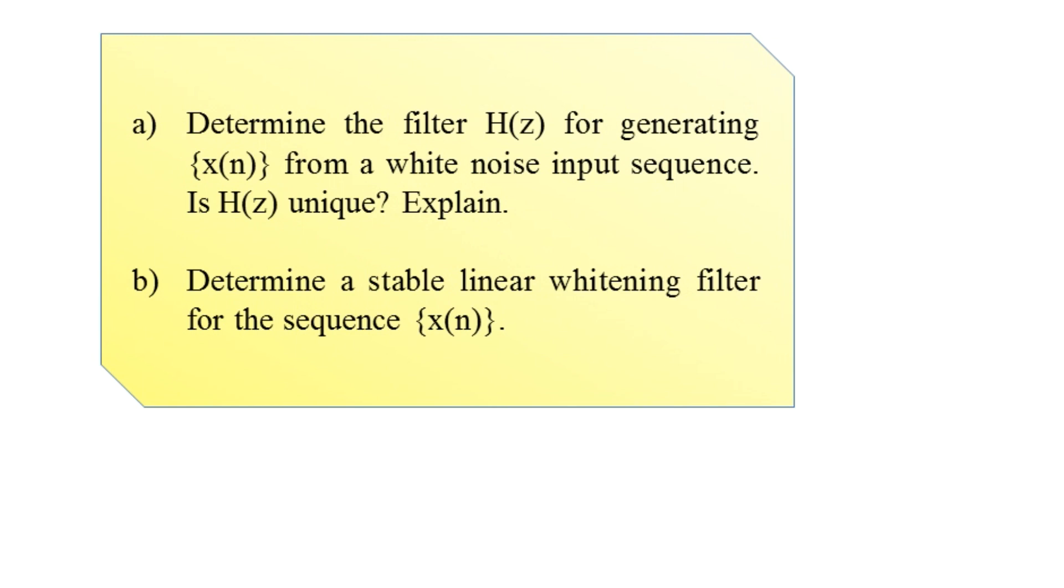We will find the solution to part a, where we are asked to determine the filter H(z) for generating x(n) from a white noise input sequence and also address whether H(z) is unique. We are provided Γ_xx(z), which is the z-transformation of the autocorrelation sequence. It equals (27/2) × [(1 - (1/3)z^(-1))(1 - (1/3)z)] / [(1 - (1/2)z^(-1))(1 - (1/2)z)].